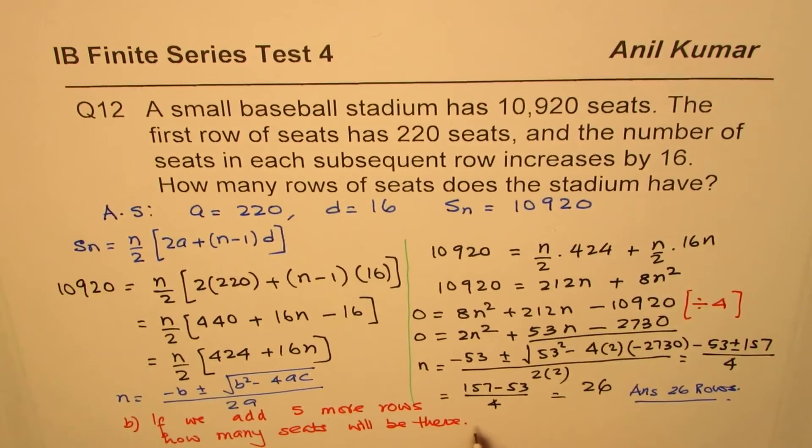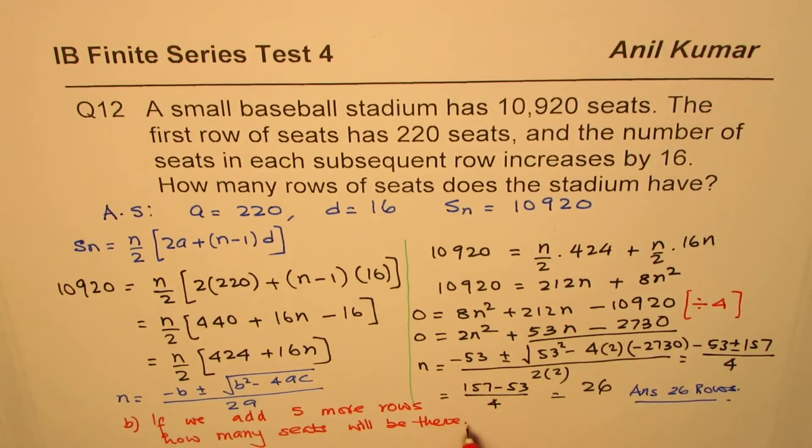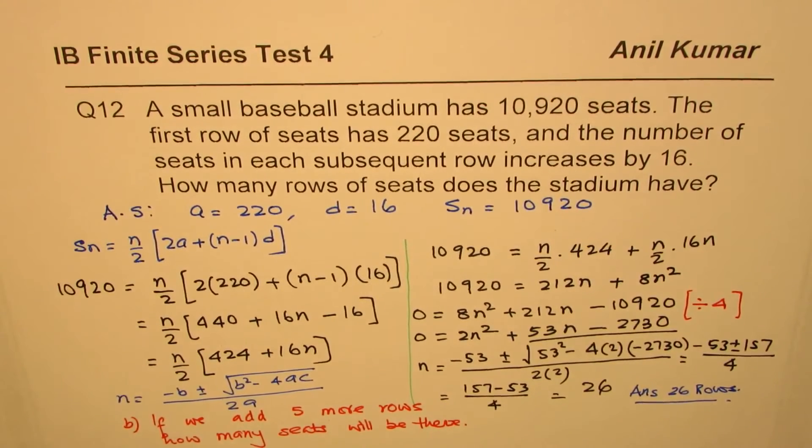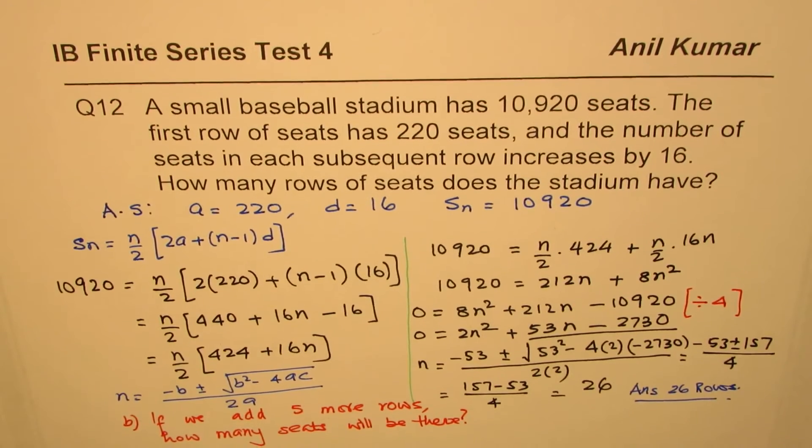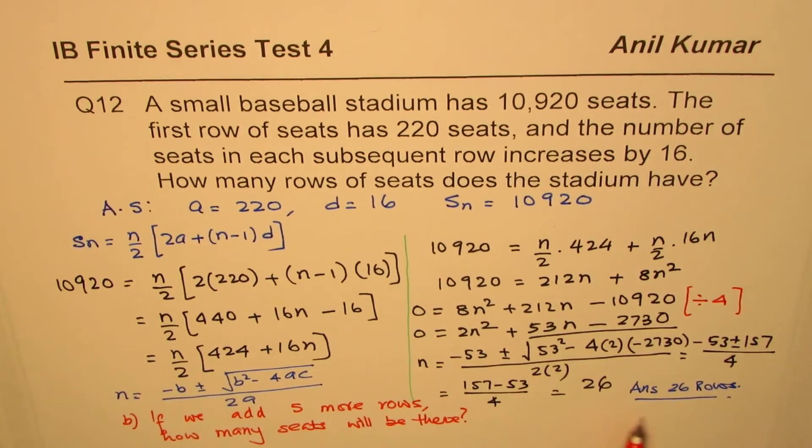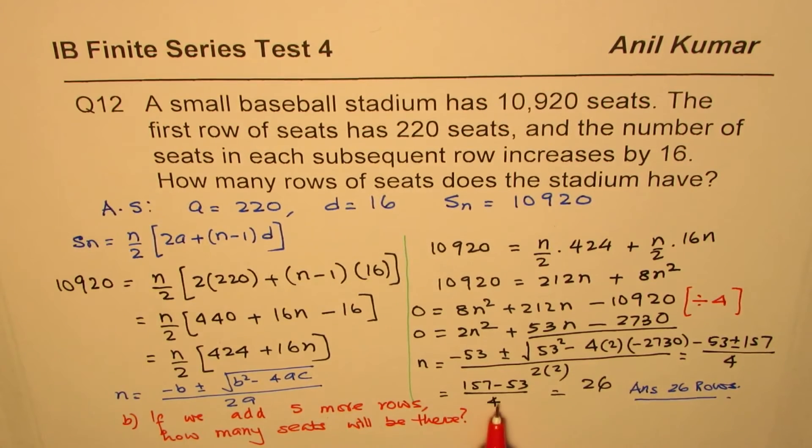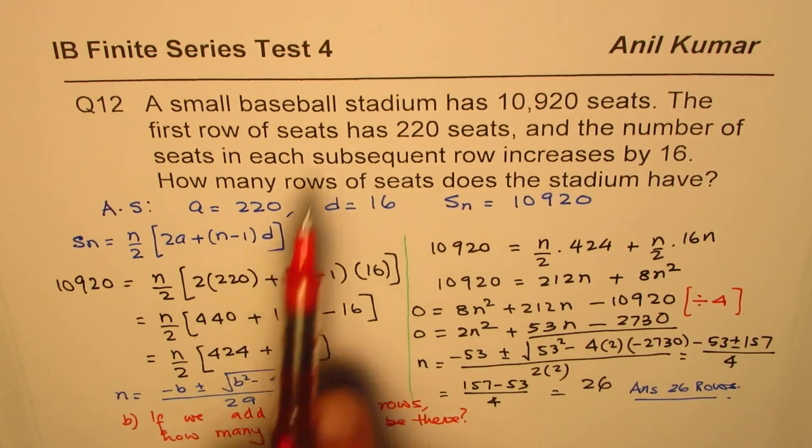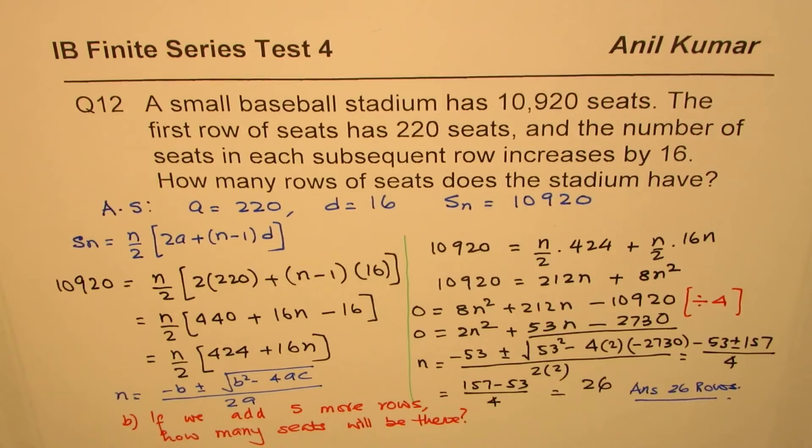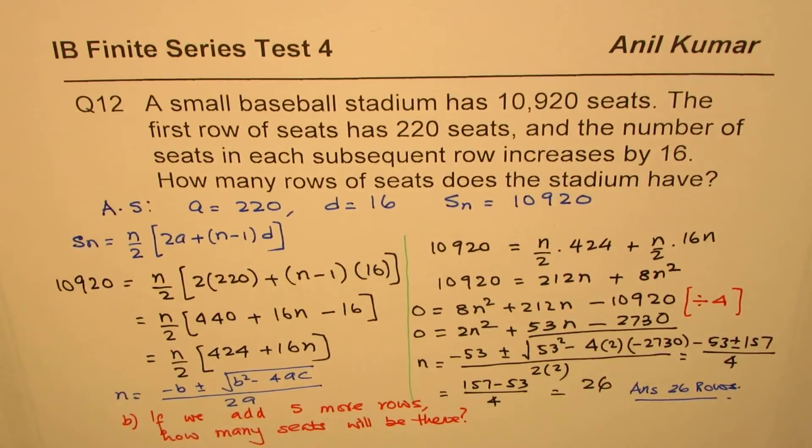So that is your extension to the given question. So that's what you have to figure out. So if we add five more rows, in this case, it becomes 31. So if there are 31 rows for the same condition, then what will be the number of seats? That's how we can actually.